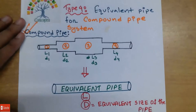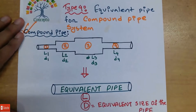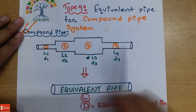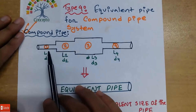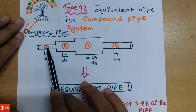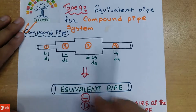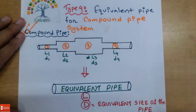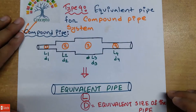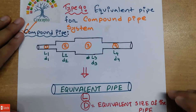First of all, in the compound pipe, there are 4 types of pipes, with 4 lengths and 4 diameters. So here we have 4 individual pipes. Now we have individual head loss, and the head loss is expressed as we have seen in tutorial 5.